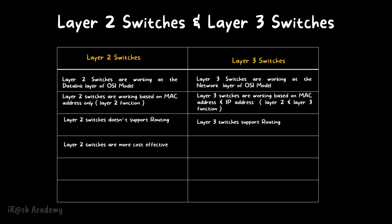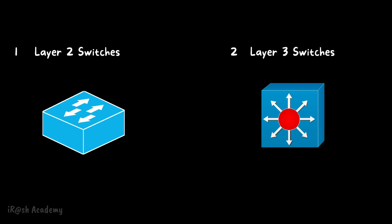Point number four: layer 2 switches are more cost effective, but layer 3 switches are more expensive than layer 2 switches. Since the switching function is controlled by hardware, when a manufacturer wants to include routing functionality in a network switch, they need additional hardware resources — electronic chips, transistors, integrated circuits, etc. — which is costly. So layer 2 switches are cost effective and layer 3 switches are highly expensive by comparison.